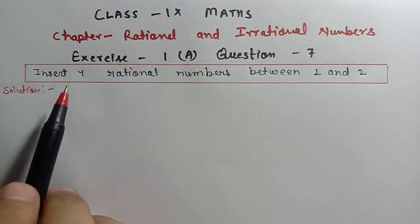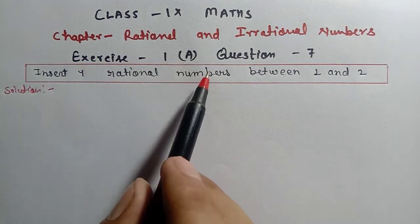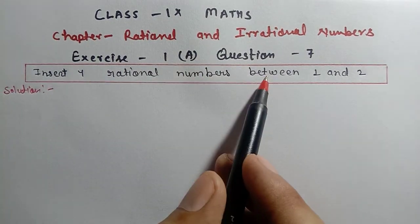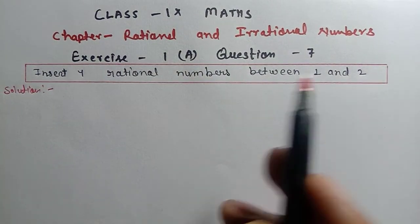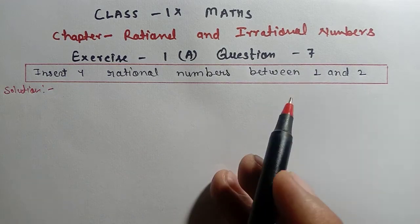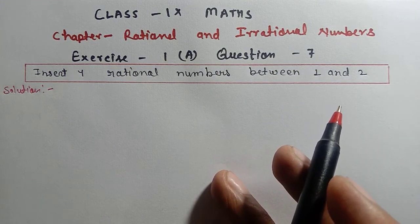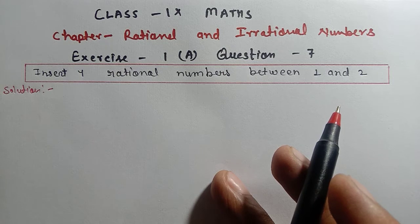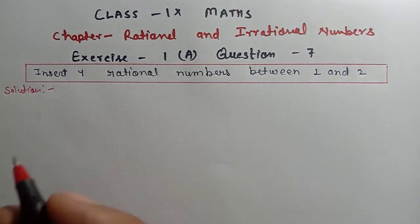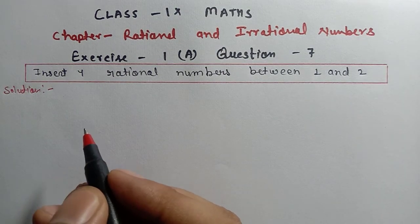So the question is: insert 7 rational numbers between 1 and 2. We need to insert 7 rational numbers between 1 and 2, as the question says. So we will solve and insert them.